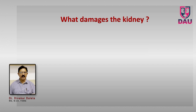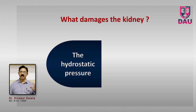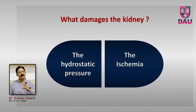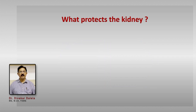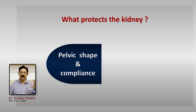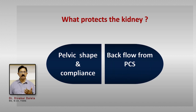To summarize what damages the kidney in a hydronephrotic kidney: the hydrostatic pressure within the pelvicalyceal system is the main reason, and in some patients ischemia takes place in the parenchyma. So a combination of hydrostatic pressure and ischemia damages the kidney. What protects the kidney is the renal pelvic shape and compliance of the pelvic wall, and certain backflows which take place from the pelvicalyceal system outwards, reducing the hydrostatic pressure. This combination protects the kidney.